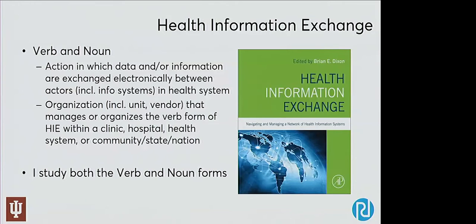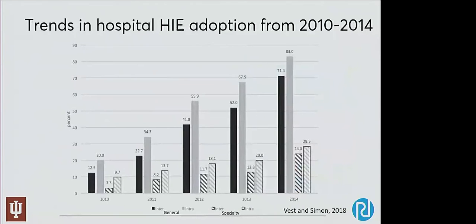At the population level, we can aggregate data to make the best decisions possible about policy and community-based interventions. Most of the literature around health information exchange usage focuses on the concept of adoption. I'm going to pick on Josh because he's not here — this is from one of his most recent studies around adoption of HIE. You can see we look at adoption over time: hospital adoption both intra-HIE, which is sharing within the same network like IU Health, and inter-HIE, sharing between organizations like Eskenazi and St. Vincent. HIE adoption has increased over time.